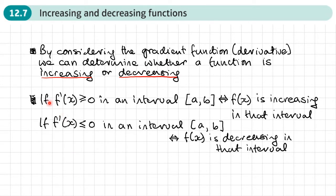So if the derivative f'(x) is always greater than or equal to zero in a particular interval — say between a and b, two x-values — then the function itself is increasing in that interval. And if the derivative f'(x) is less than or equal to zero in an interval between two values of x, then f(x), the function itself, is decreasing in that interval.